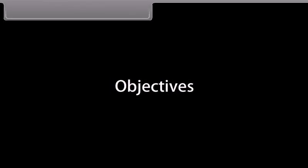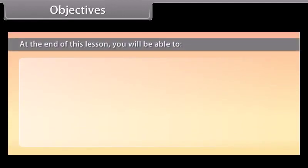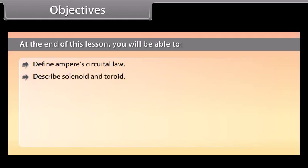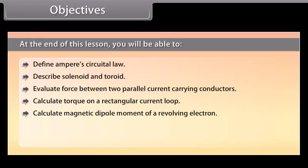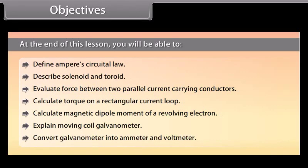At the end of this lesson, we'll be able to: Define Ampere's Circuital Law; Describe solenoid and toroid; Evaluate force between two parallel current carrying conductors; Calculate torque on a rectangular current loop; Calculate magnetic dipole moment of a revolving electron; Explain moving coil galvanometer; Convert galvanometer into ammeter and voltmeter.